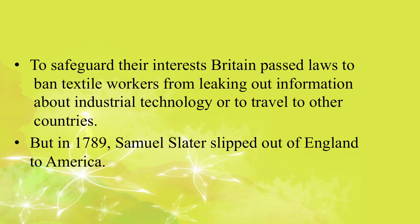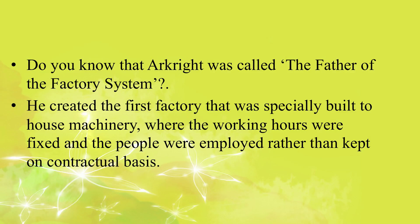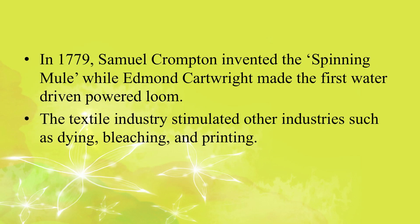But in 1789, Samuel Slater slipped out of England to America, taking the knowledge of the British textile industry with him, which initiated the Industrial Revolution in America. Vast new areas were brought under cotton plantations in America, which increased the demand for slaves. Similar incidents started the Industrial Revolution in France and Germany. Arkwright was called the father of the factory system — he created the first factory specially built to house machinery, where working hours were fixed. In 1779, Samuel Crompton invented the spinning mule, while Edmund Cartwright made the first water-driven powered loom. The textile industry also stimulated other industries such as dyeing, bleaching, and printing.